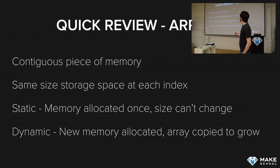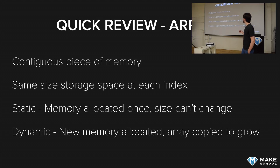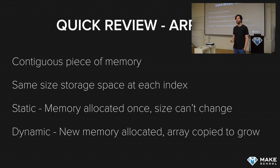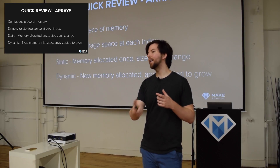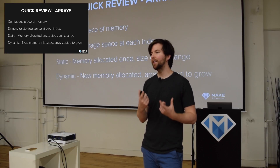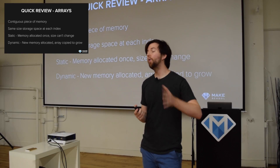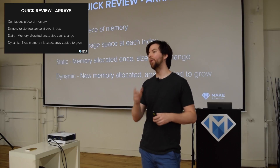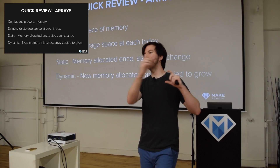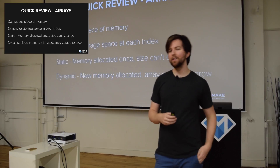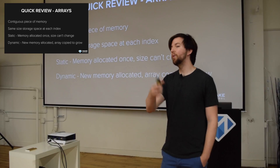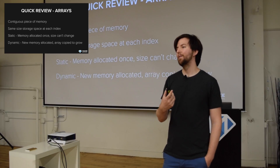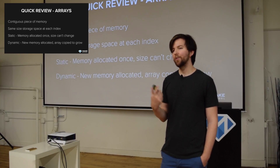There are two kinds of arrays. There's static arrays, where memory is allocated once and the size can't change. In a C-type language, I can allocate an array of integers and tell it I want to store 10 integers — so I can only ever store 10 elements, only access indices 0 through 9. If I want to add more than 10 elements, I'm out of luck. I can replace or access existing ones, but I can't add any more.